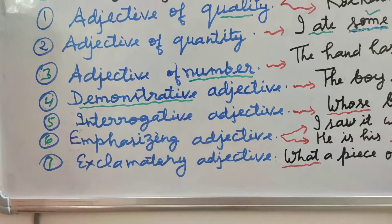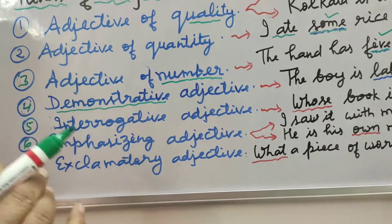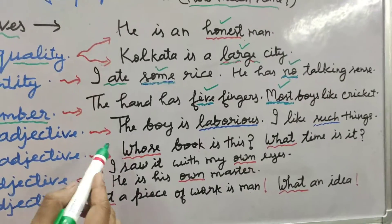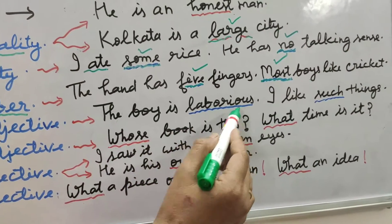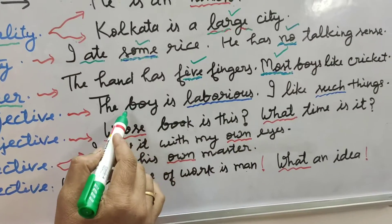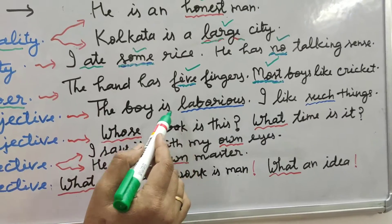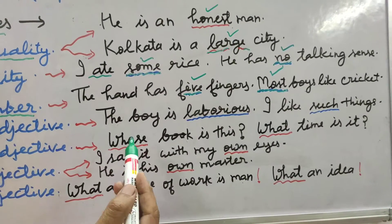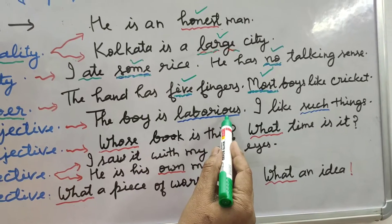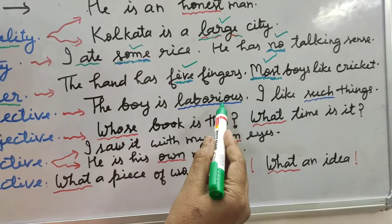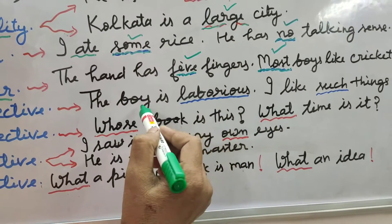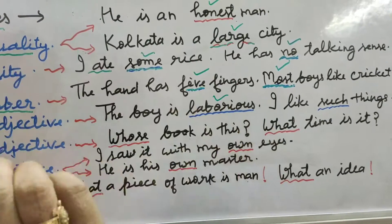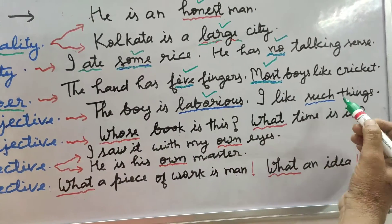Number four: demonstrative adjective. Demonstrative means to explain or demonstrate something about the quality of the noun. 'The boy is laborious.' Which type of boy? It is demonstrating the quality of the boy — laborious, explaining about the boy. 'I like such things.' Which type of things? Such things.